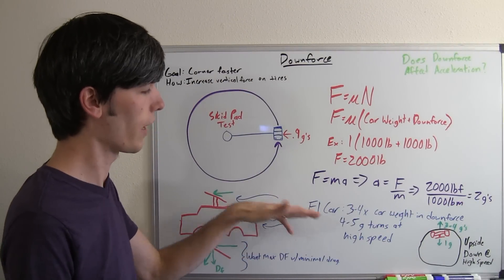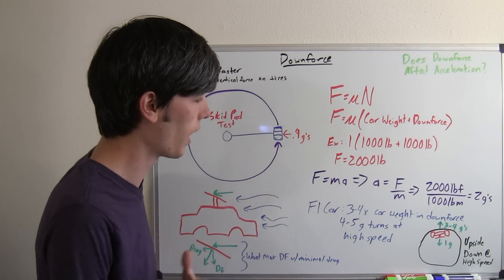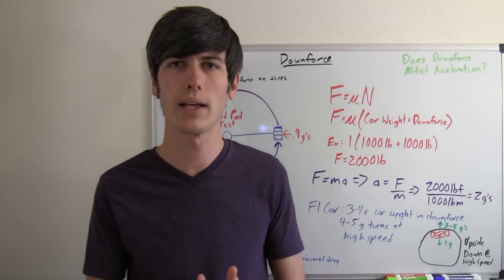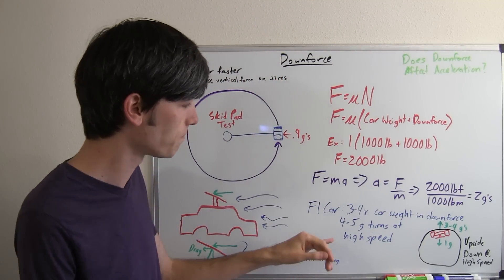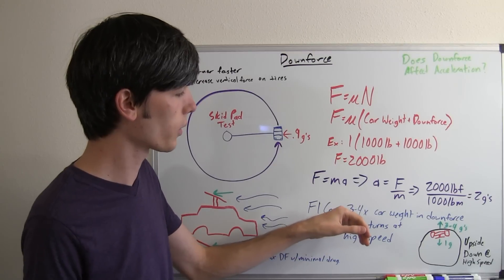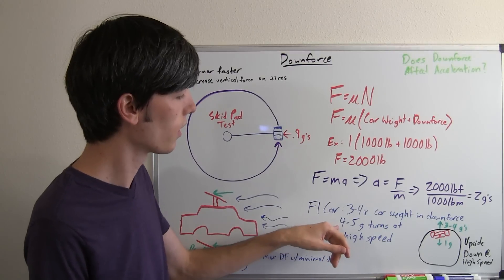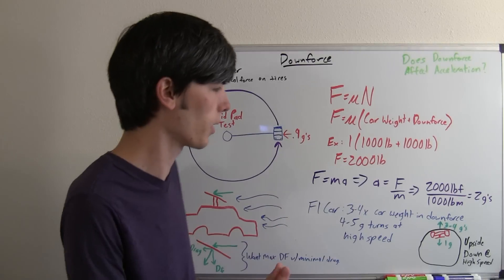Now for F1 cars, something that's taking this to the extreme, something that has the most amount of downforce out there, these cars actually create about 3 to 4 times their vehicle weight when they're at high speeds around 200 miles per hour or close to there. When creating these high speeds at 3 to 4 times the car's weight, that means they can take corners at 4 to 5 G's, which is pretty incredible.